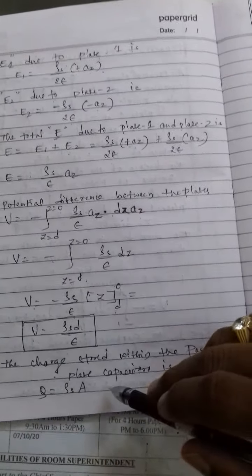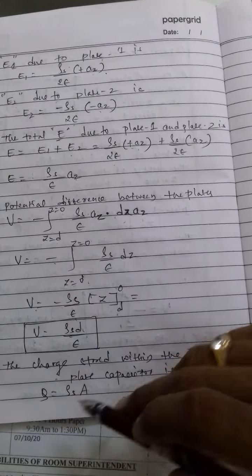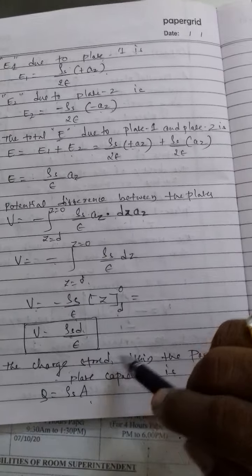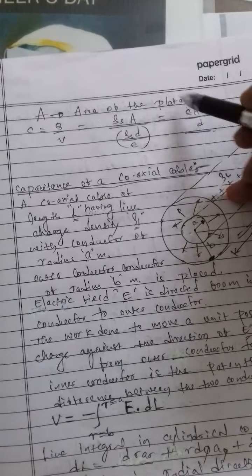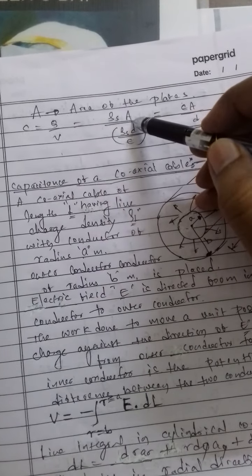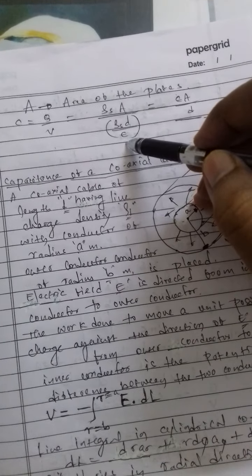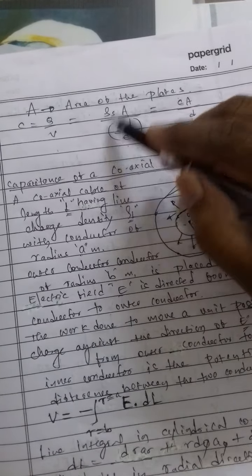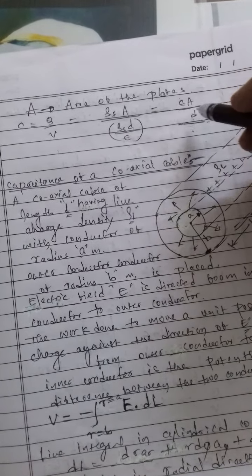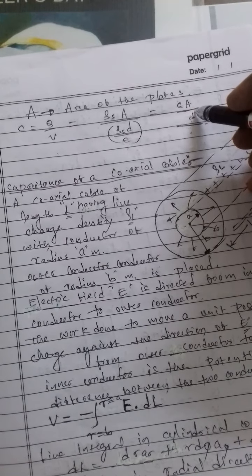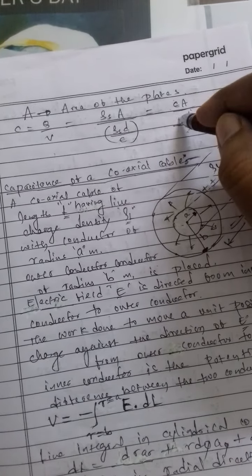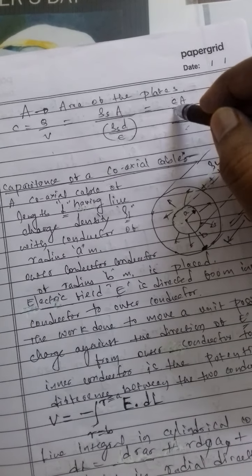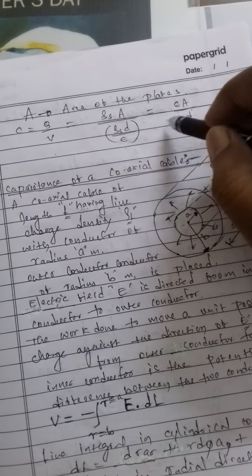The charge stored within the parallel plate capacitor is Q equals rho_s times A, where A is the area of the plates. Therefore, the capacitance C equals Q over V equals rho_s times A divided by (rho_s times d over epsilon), which gives C equals epsilon times A over d. This is the capacitance of a parallel plate capacitor, where A is the plate area, d is the plate separation, and epsilon is the permittivity of the dielectric material between the plates.